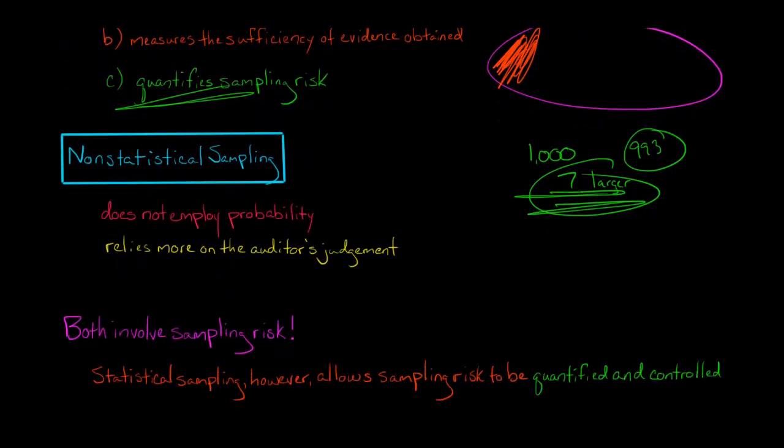Again, just a note: there's sampling risk associated with each type of sample. Whether we do non-statistical or statistical sampling, we're always going to have sampling risk. We can't get out of that. Statistical sampling is going to allow us to actually quantify the risk that we have.